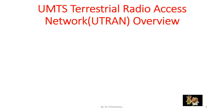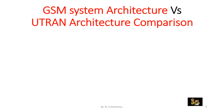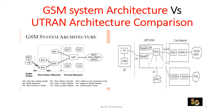Compared to the GSM network architecture, the radio access network of UMTS called the UTRAN, that is Universal Terrestrial Radio Access Network, constitutes the main innovation and allows data and signaling traffic exchange between user equipment, UE, and core network, CN. A GSM system architecture versus UTRAN architecture comparison is shown below.